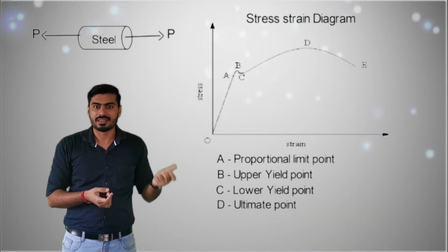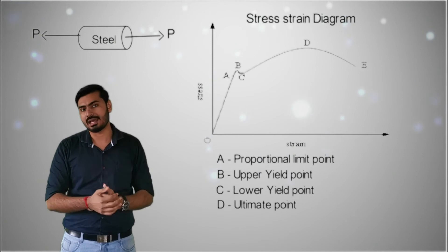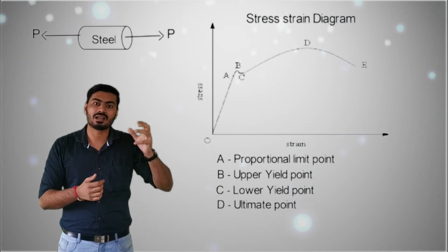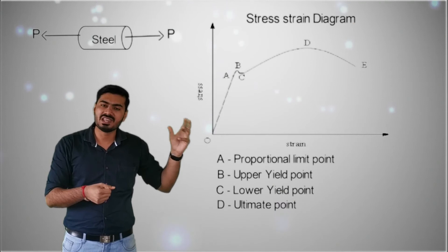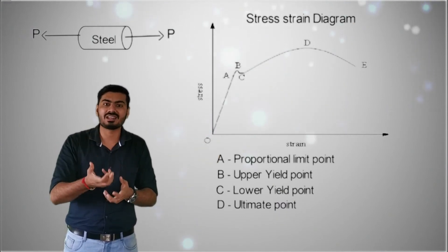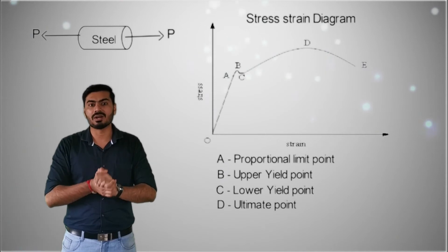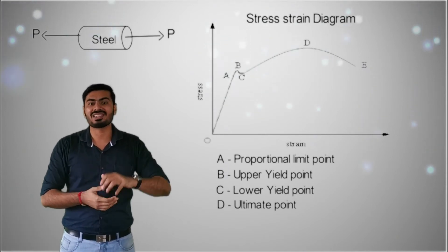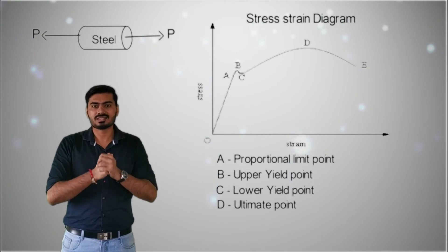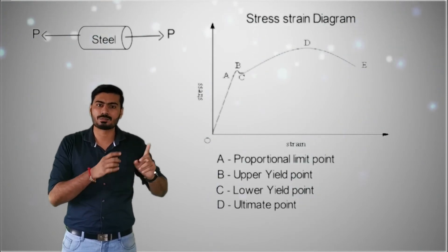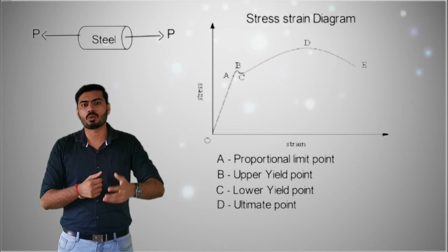Due to strain hardening, you will achieve point D, which is the ultimate point. At this point the material reaches the maximum amount of stress it can sustain, or we can say the material can absorb the maximum amount of strain up to this point. After the ultimate point D, the material cannot withstand more strain. This is the maximum energy the material can carry, which is why it is named the ultimate point, and the corresponding stress is the ultimate stress.